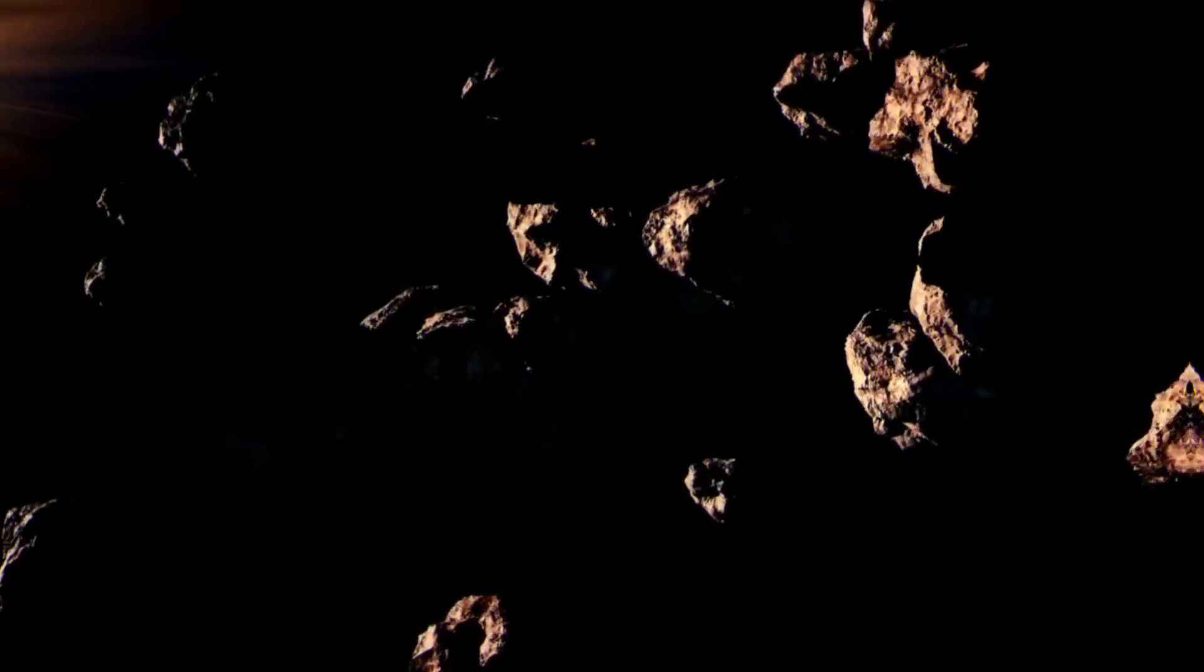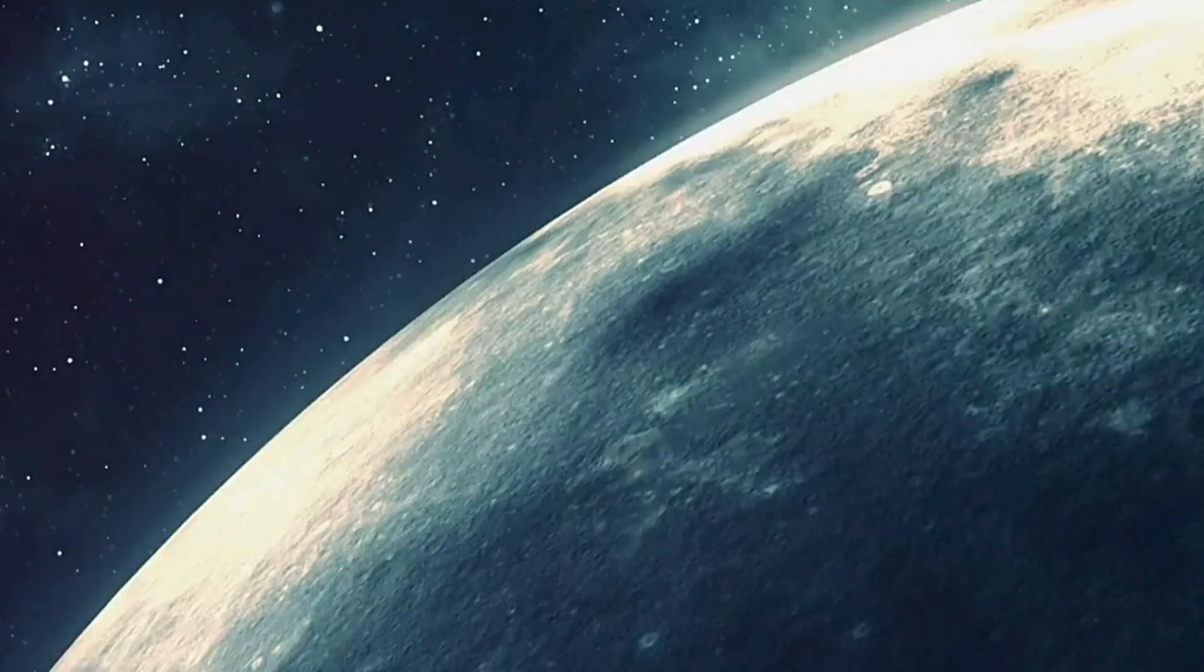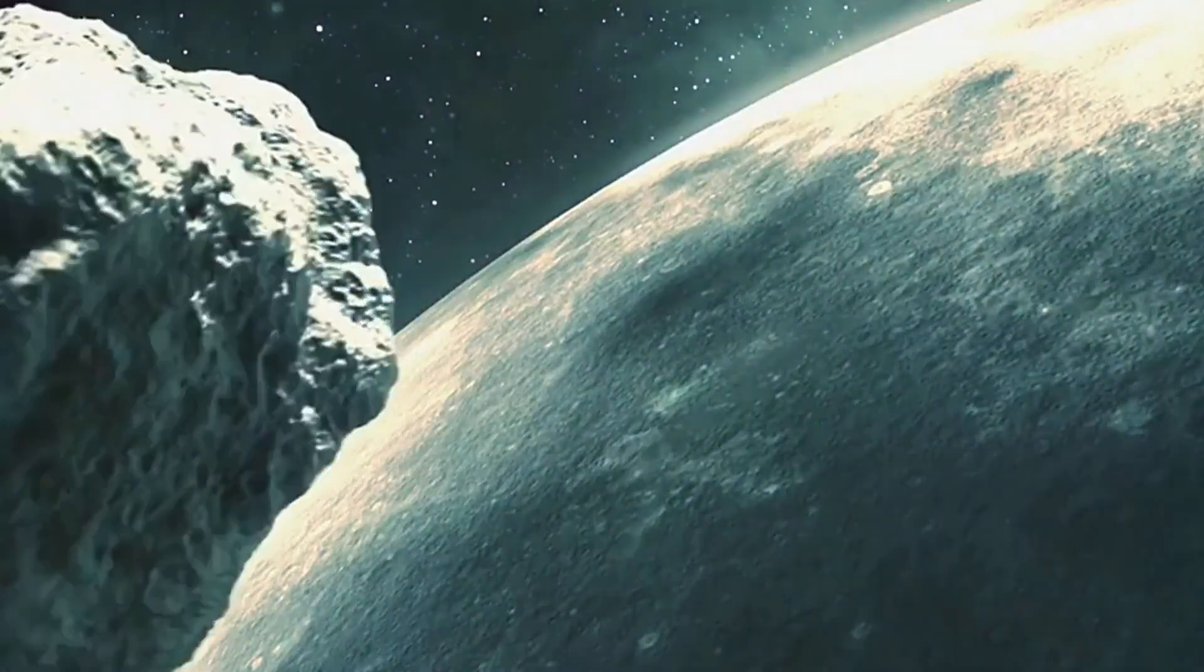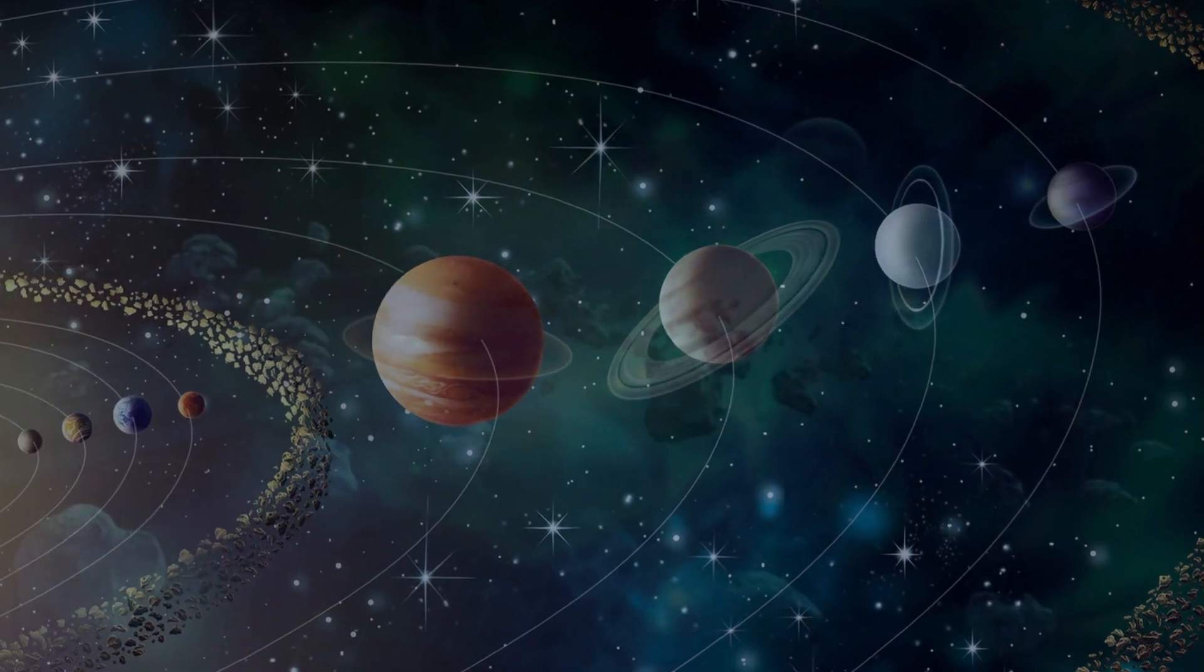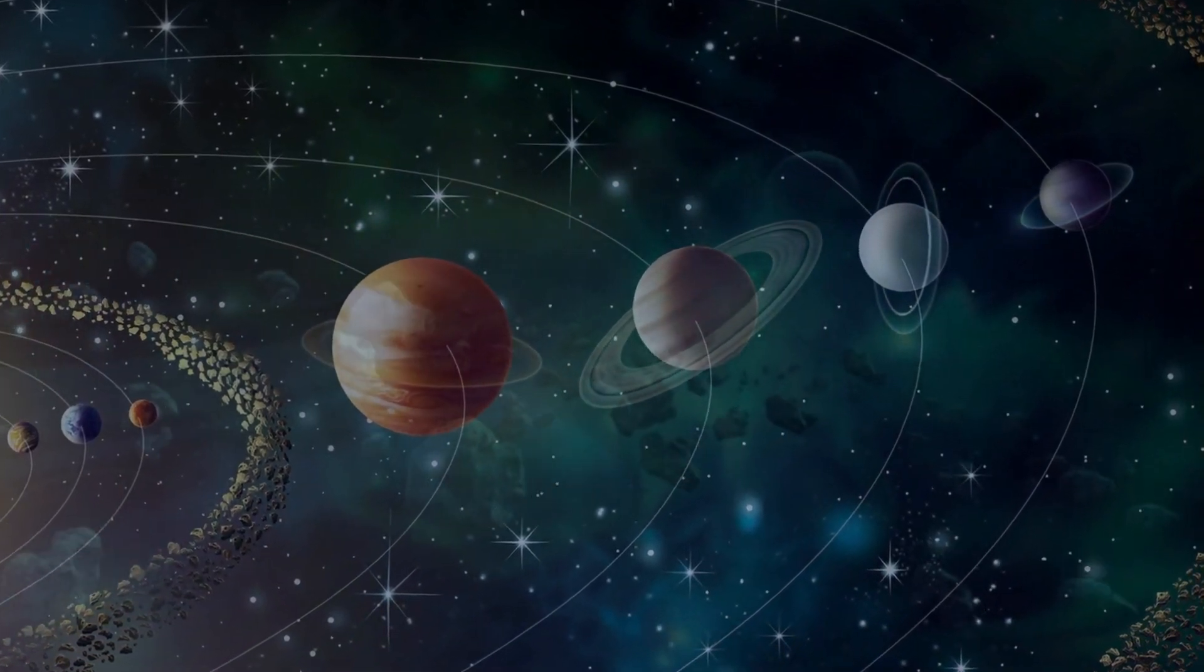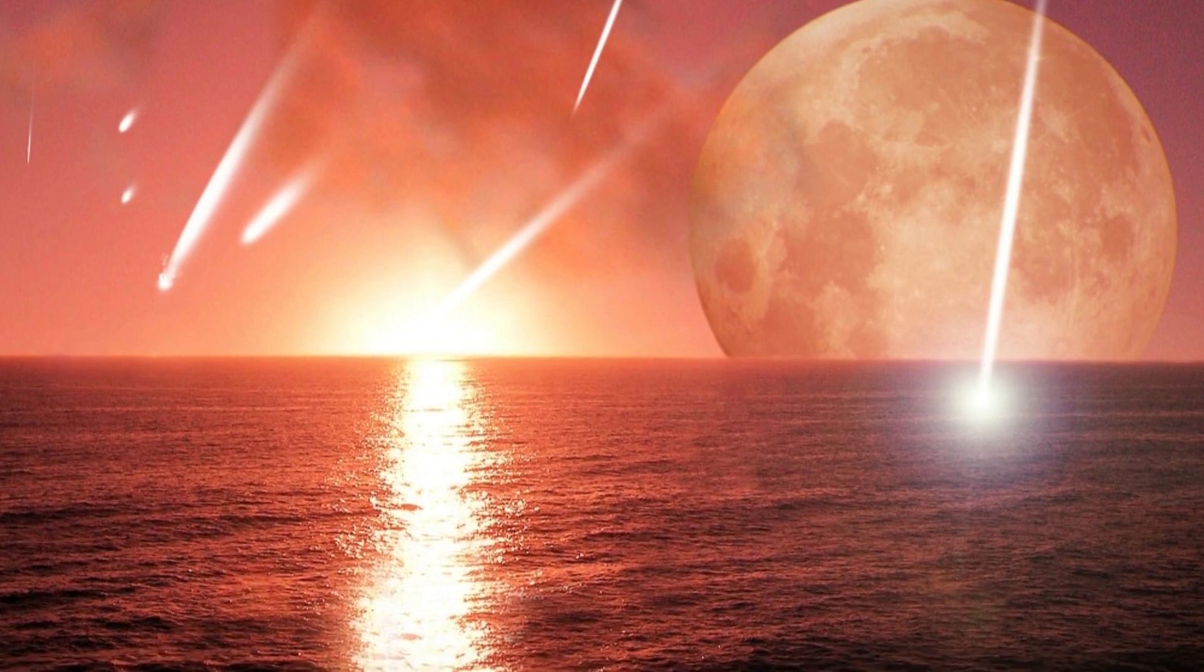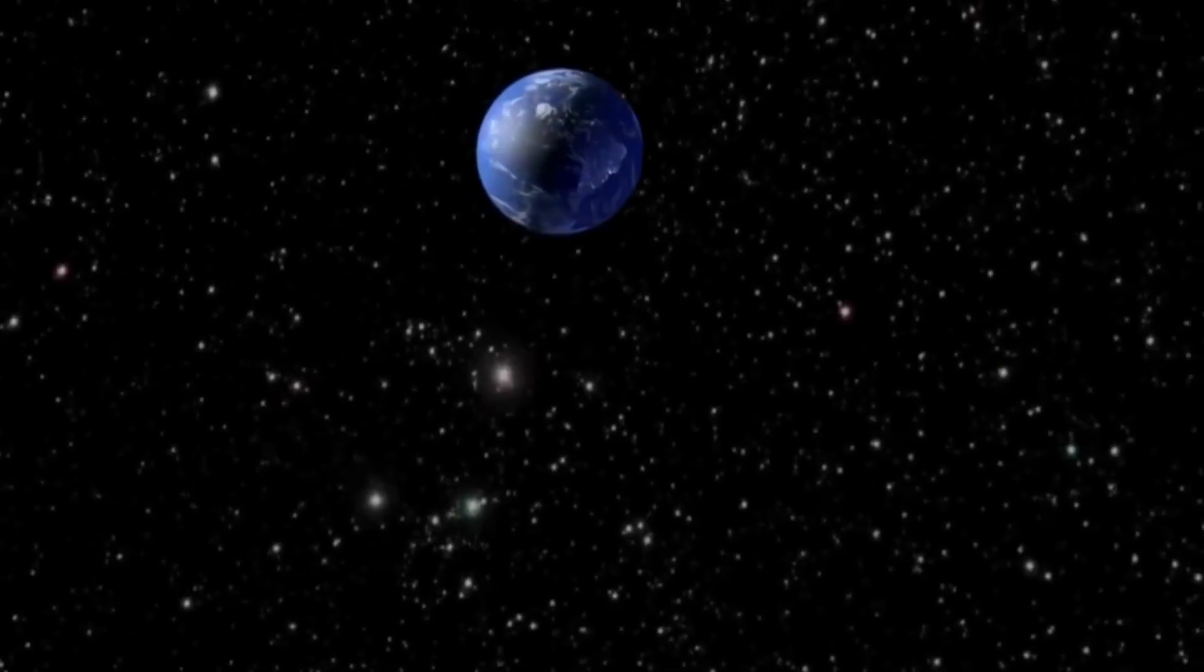Understanding what makes dark comets behave the way they do could lead to groundbreaking insights into the origins of water and organic materials on Earth. If these objects are indeed releasing water as they travel through the solar system, they could be part of the puzzle of how water, one of the key ingredients for life, ended up on our planet.